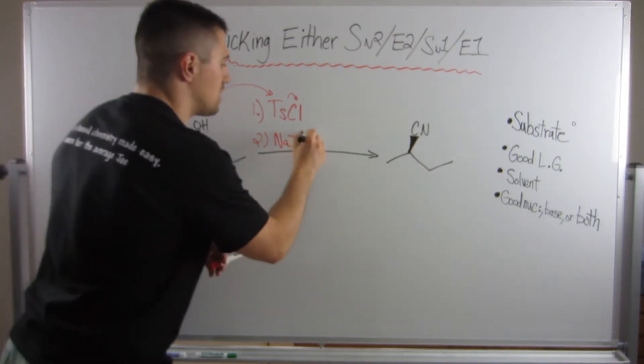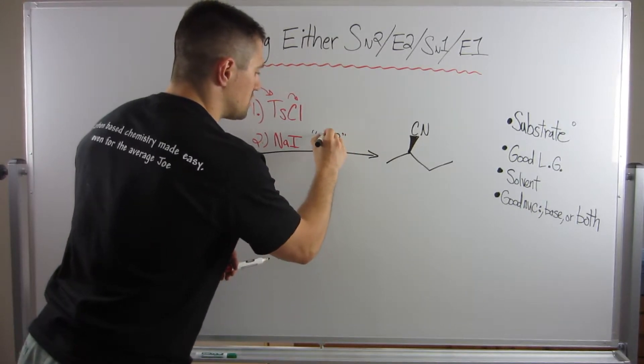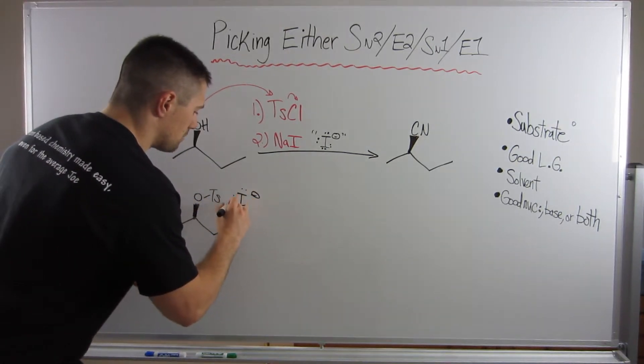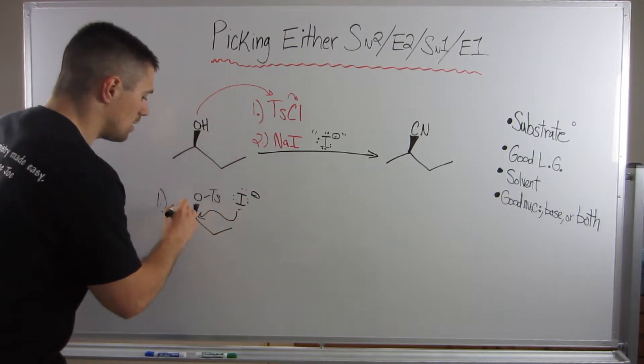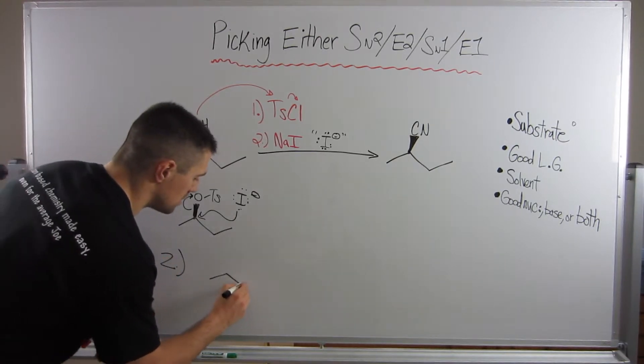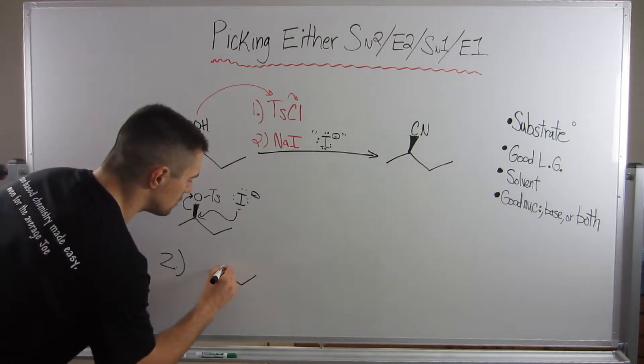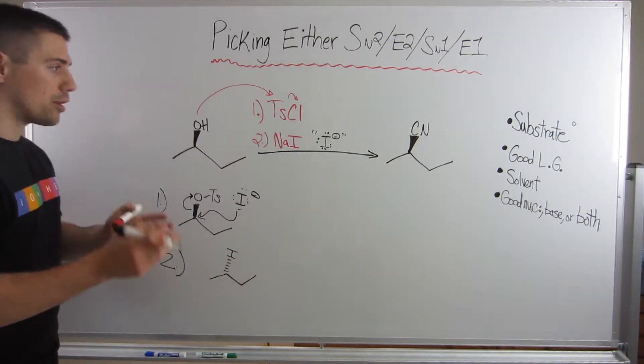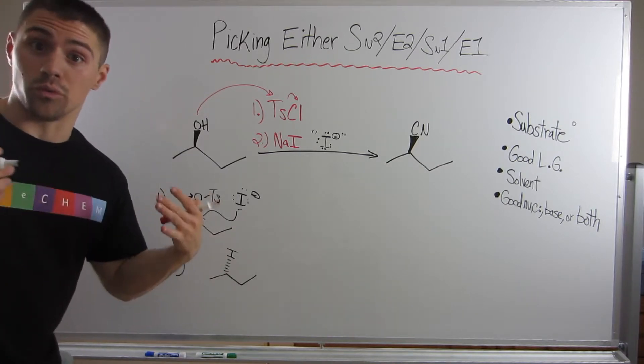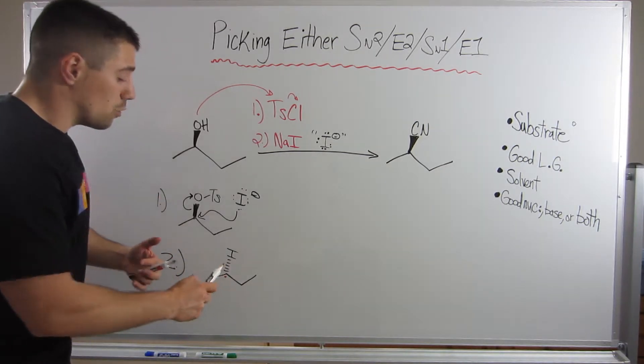So we need to do an SN2 reaction on this, and this is not going to be like a permanent thing we'll see in the product. This is just something that's going to help us get to where we need to go. So what I'm going to do is I'm just going to throw in sodium iodide. And really, for us, all we care about is that this is going to give us I-. Because what the I- does, it's a good nucleophile. We attack right here, boot our now good leaving group, and that gives us this.